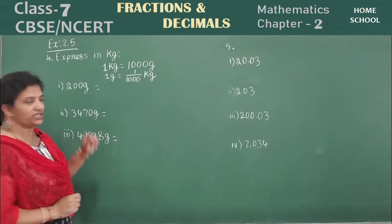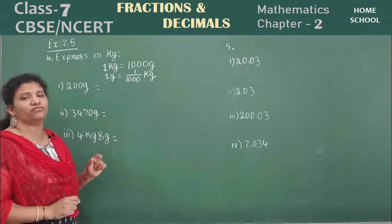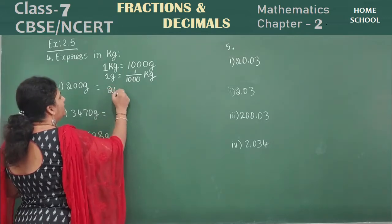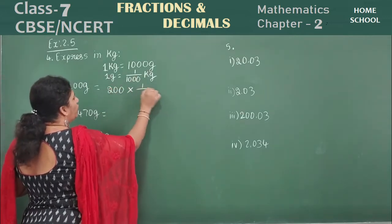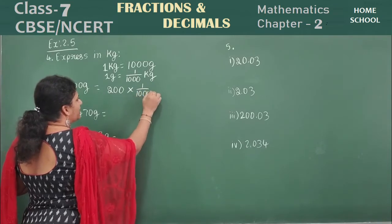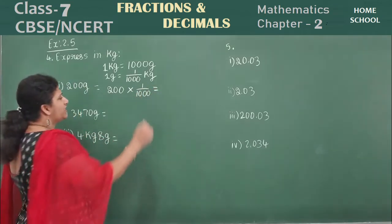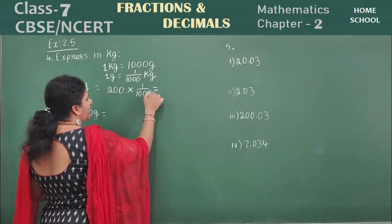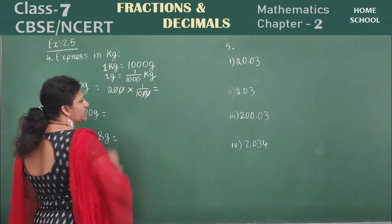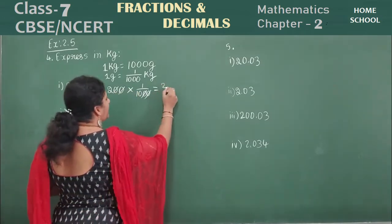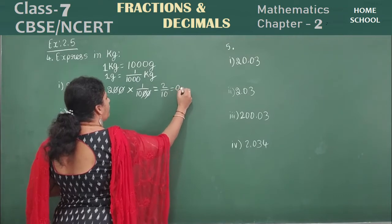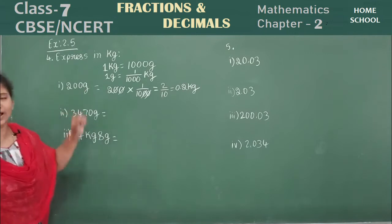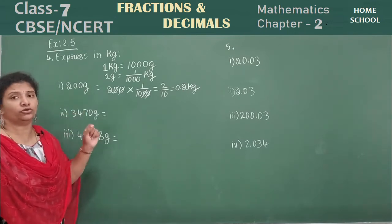So your first question, convert 200 grams in the form of kg. So how will you write? 200 grams means 200 into one by thousand. That will be... Say your children, if you want you can rewrite like this, or just you can cancel two zeros, two zeros, and this will be 2 by 10, that will be 0.2 kg.